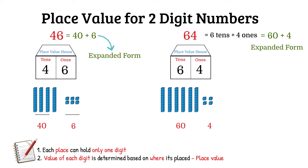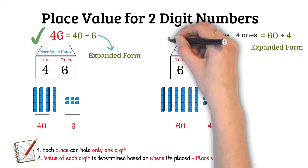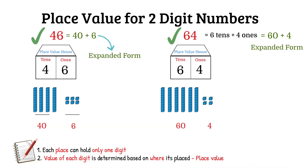As we observe, the same two digits 4 and 6 form two different numbers — 46 and 64 — based on where we place the digits.